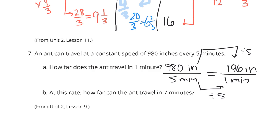Now, 7 minutes, if I have 196 inches in 1 minute, and I'm trying to get to 7 minutes, well, multiply by 7. And 196 times 7 is 1,372 inches in those 7 minutes.